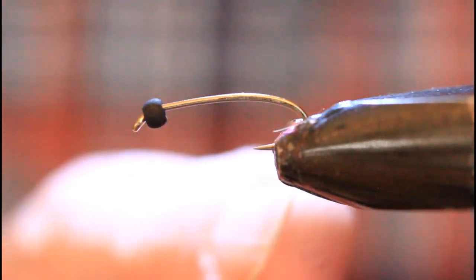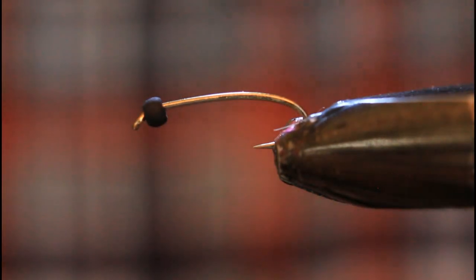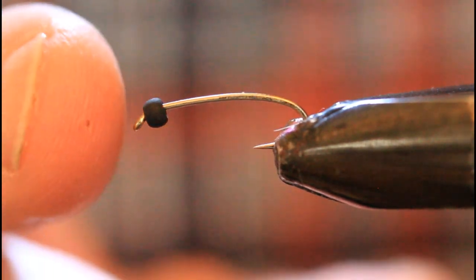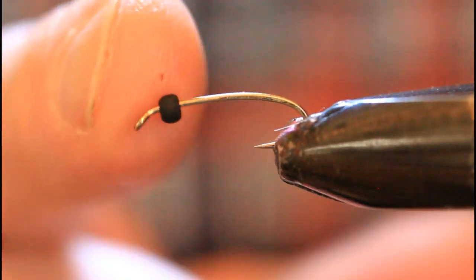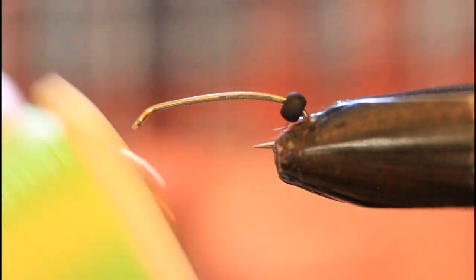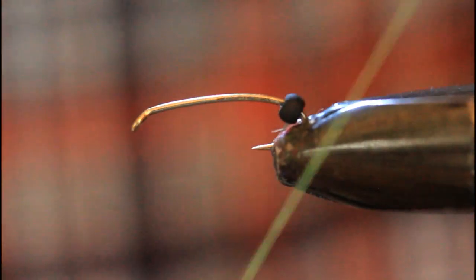Into my vise, I've got a Togans No. 14 2X Long Curved Nymph Hook. To that I have attached a 3/32nd matte black bead. And we're going to come in with our fluorescent chartreuse 70 denier tying thread.